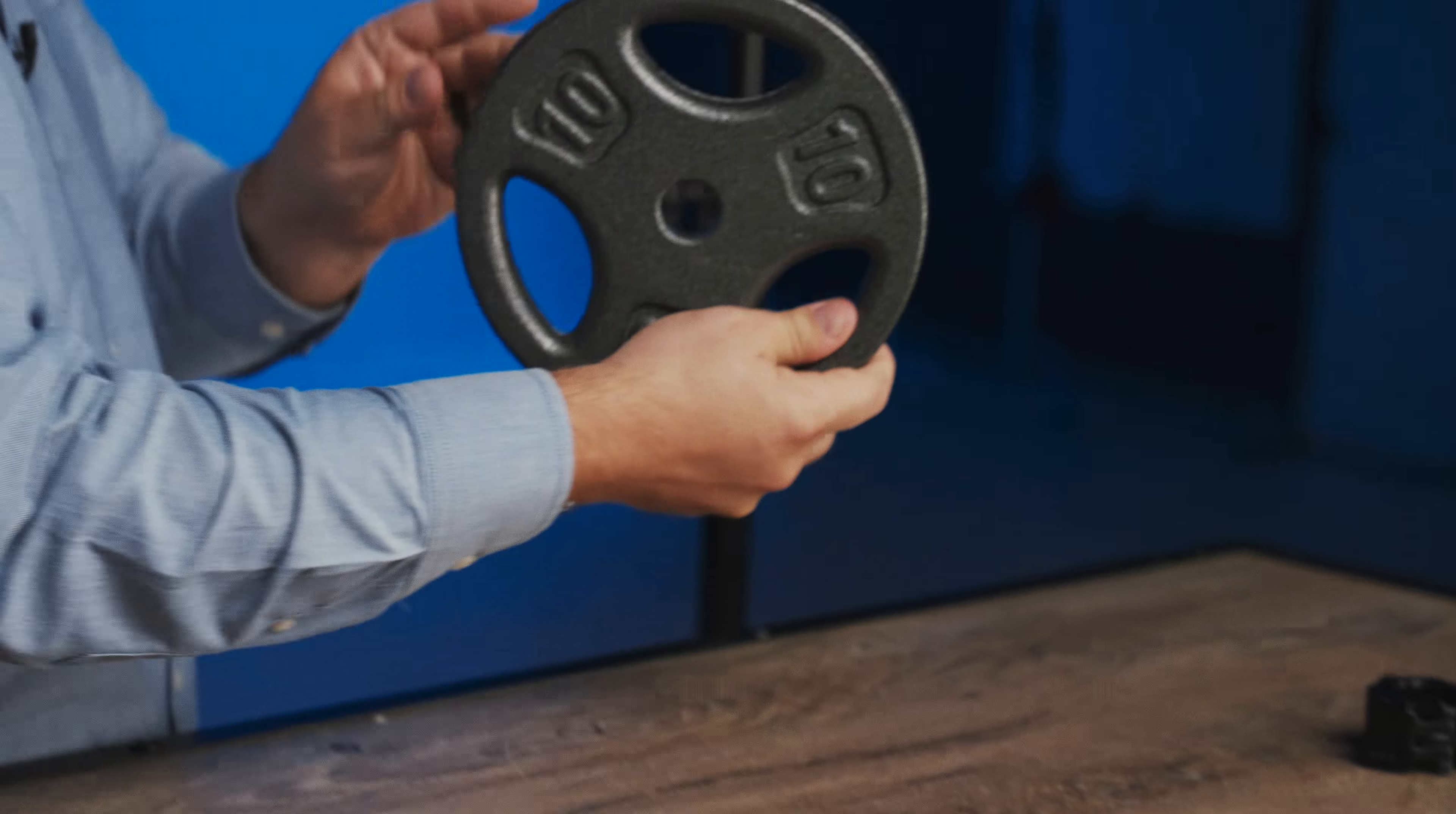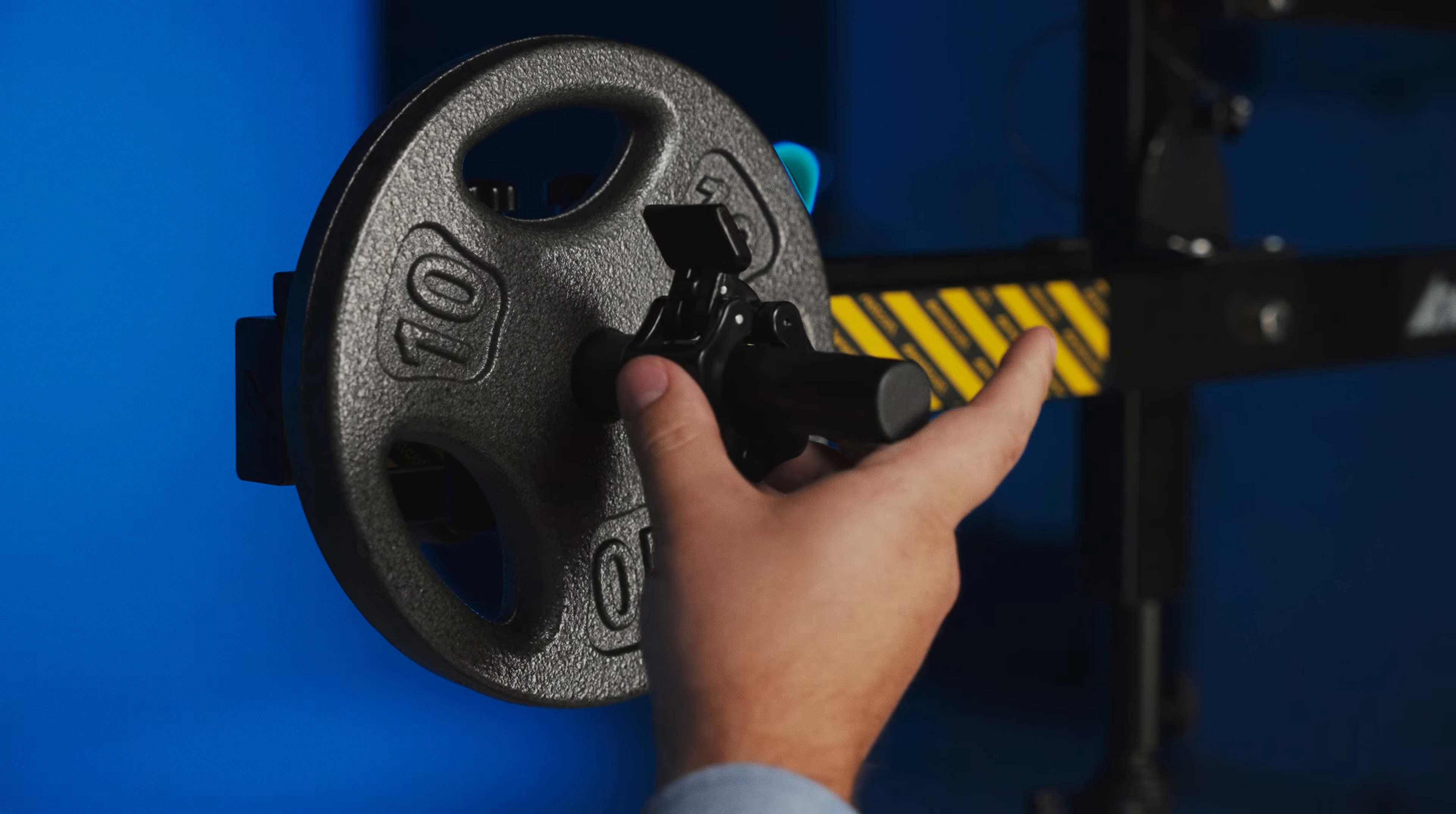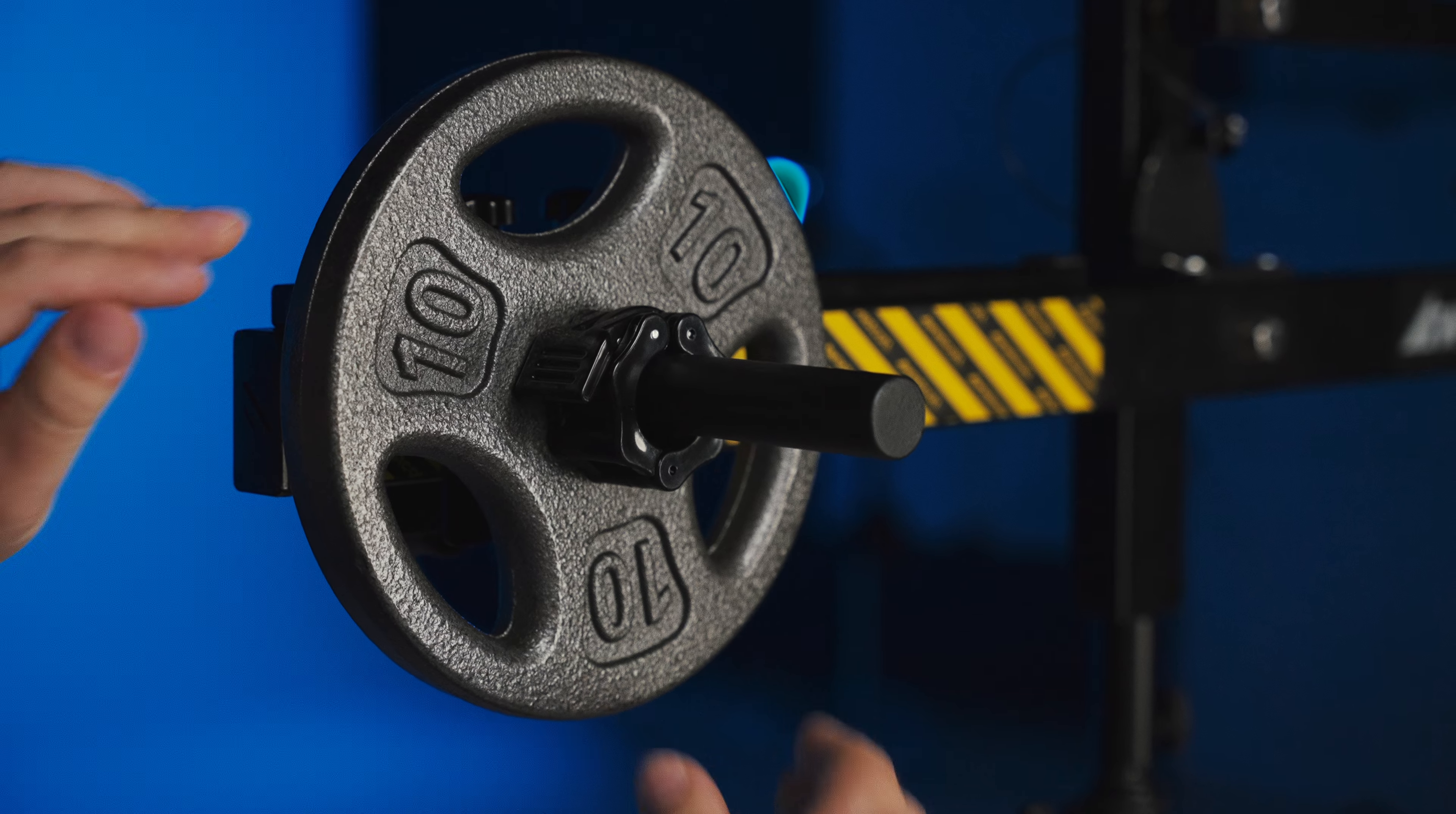Place sufficient weight plates onto the weight plate bracket's arm to properly counterbalance the equipment you plan to mount. Locate the weight plate clamp, open its lever, and slide the clamp onto the weight plate bracket's arm until it sits flush with the mounted weight plates. Close the lever to secure the clamp onto the weight plate bracket's arm.